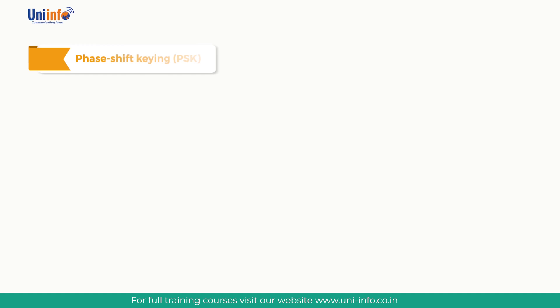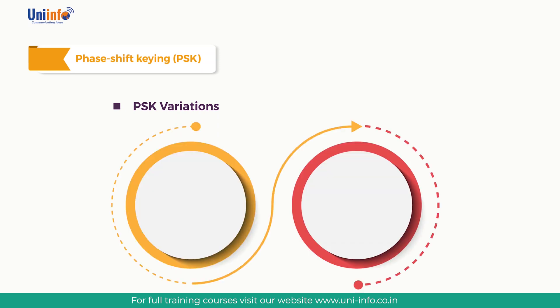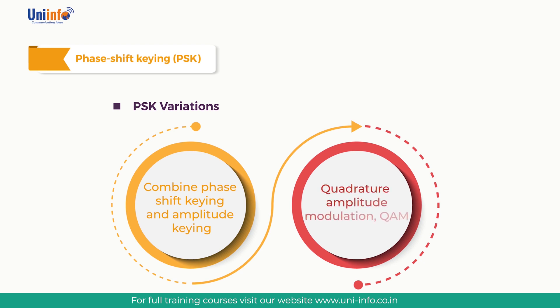There are many ways to implement PSK modulation. It is even possible to combine phase shift keying and amplitude keying in a form of modulation known as quadrature amplitude modulation (QAM). There are many variations on the basic idea of phase shift keying, each with its own advantages and disadvantages, enabling system designers to choose the most applicable for any given circumstances.